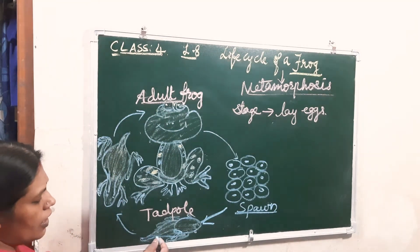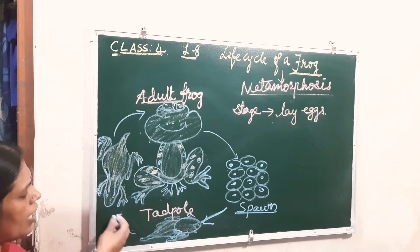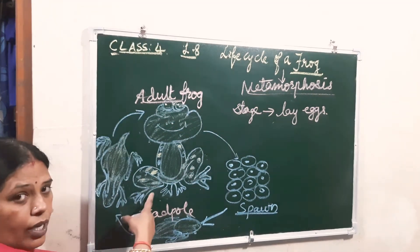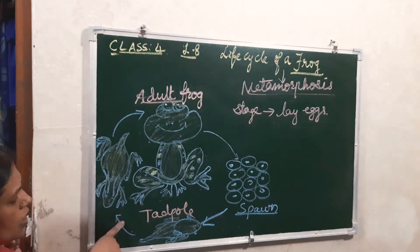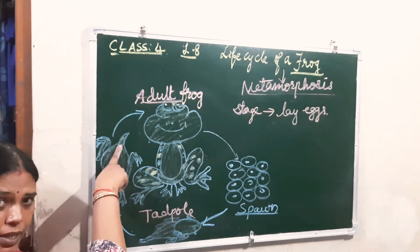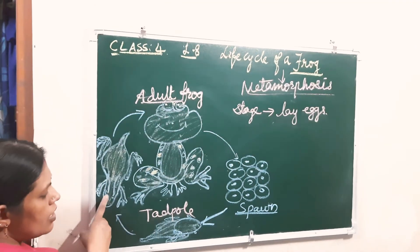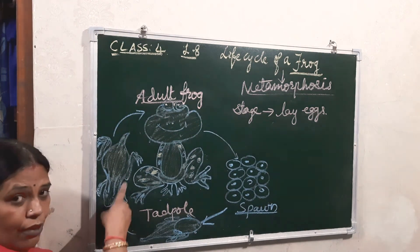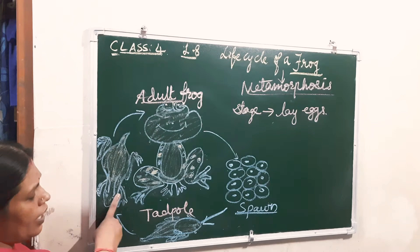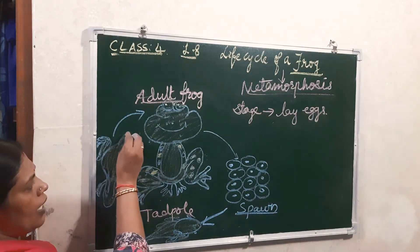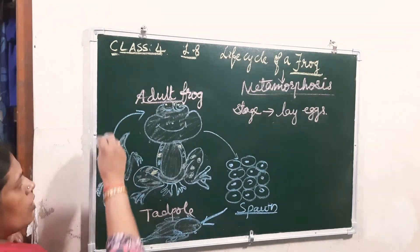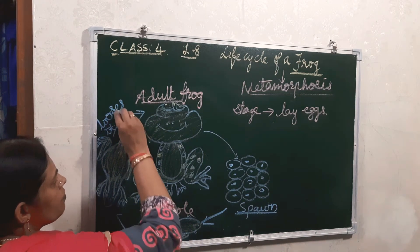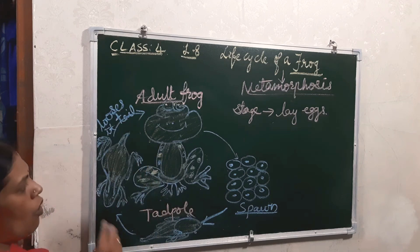Afterwards it grows in water and becomes the young frog. The tail is still there a little bit, and then gradually the hind limbs and fore limbs develop. Then this tail is also lost. Afterwards it becomes an adult frog.